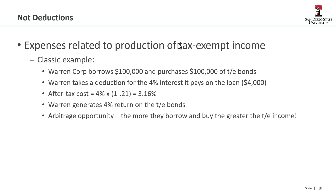Let's say Warren Corp borrows $100,000 and purchases $100,000 of tax-exempt bonds. The loan is at 4%, so Warren's going to take a deduction for the 4% interest it pays on the loan — that's $4,000. Because Warren is a corporation, its after-tax cost is only 3.16%, because it gets a tax deduction for the interest it pays. But let's assume it could actually generate a 4% return on those tax-exempt bonds.